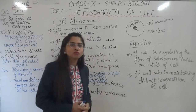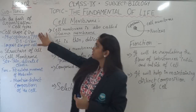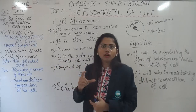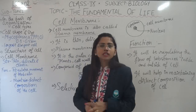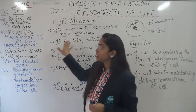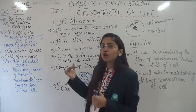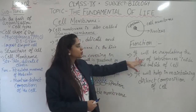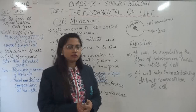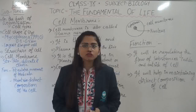In today's class, you have understood the difference between prokaryotic and eukaryotic cells, the cell shape and size which varies depending on function, and the structure of the cell composed of plasma membrane, nucleus, and cytoplasm. The cell membrane, also called the plasma membrane, is selectively permeable or semi-permeable, regulates the flow of substances inside and outside, and helps in maintaining the distinct composition of the cell. Do your assignment which will be uploaded in the ERP — this assignment will be assessed for your QD Test 1. Thank you.